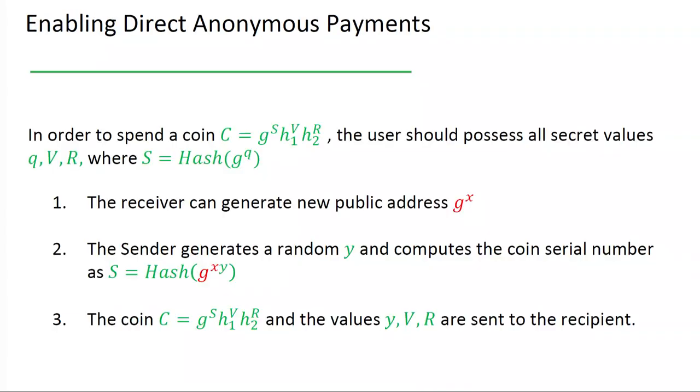Last, let's discuss how we enable direct anonymous payments when the outputted coins can be spent only by dedicated recipients. In our structure, in order to spend this coin, which has the following structure, it's a commitment to the coin serial number S, the user should possess all the secret values, the coin value, randomness, and also the witness or spending key, which was used to generate the serial number. And we can use some Diffie-Hellman-like key exchange process to make this witness accessible only to the recipient. Like in very simple setup, the receiver can generate new public address, and the sender can generate a random Y and create a public key, which witness is accessible only to the receiver. Of course, this can work also with dual key based stealth addresses protocol.